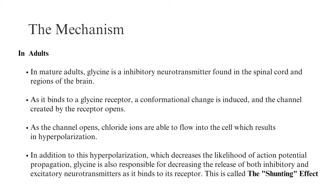The Mechanism in Adults: In mature adults, glycine is an inhibitory neurotransmitter found in the spinal cord and regions of the brain. As it binds to a glycine receptor, a conformational change is induced and the channel opens. Chloride ions flow into the cell, resulting in hyperpolarization. This hyperpolarization decreases the likelihood of action potential propagation. Glycine is also responsible for decreasing the release of both inhibitory and excitatory neurotransmitters as it binds to its receptor — this is called the shunting effect.